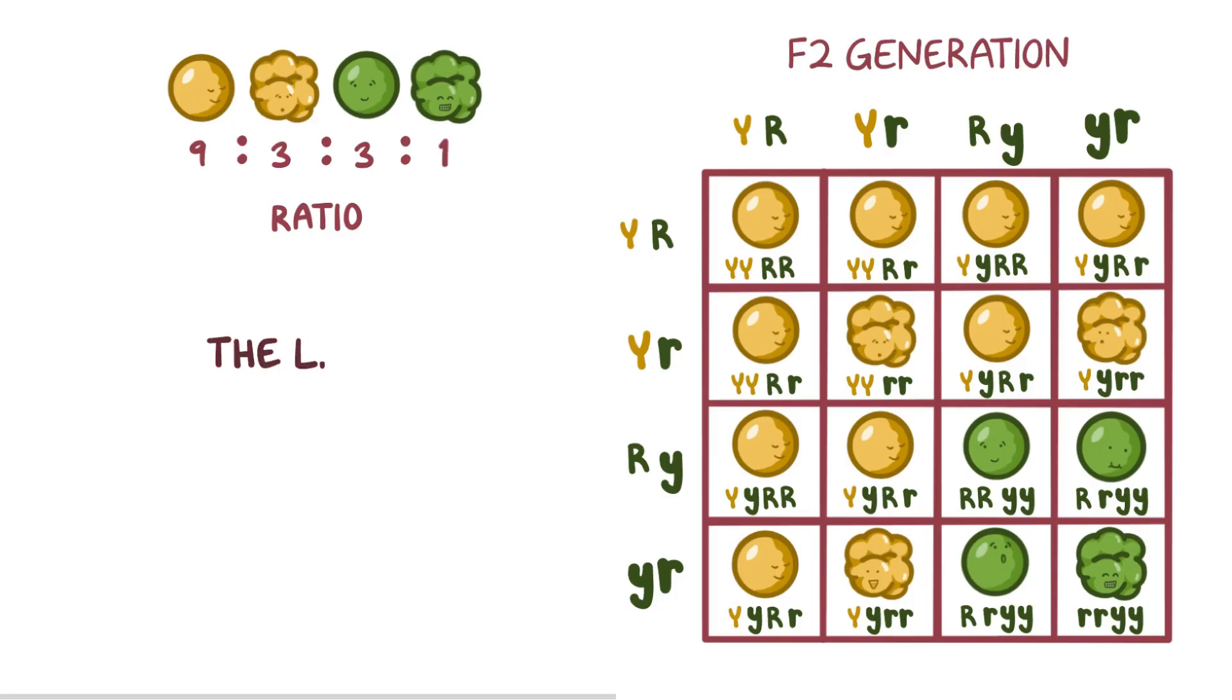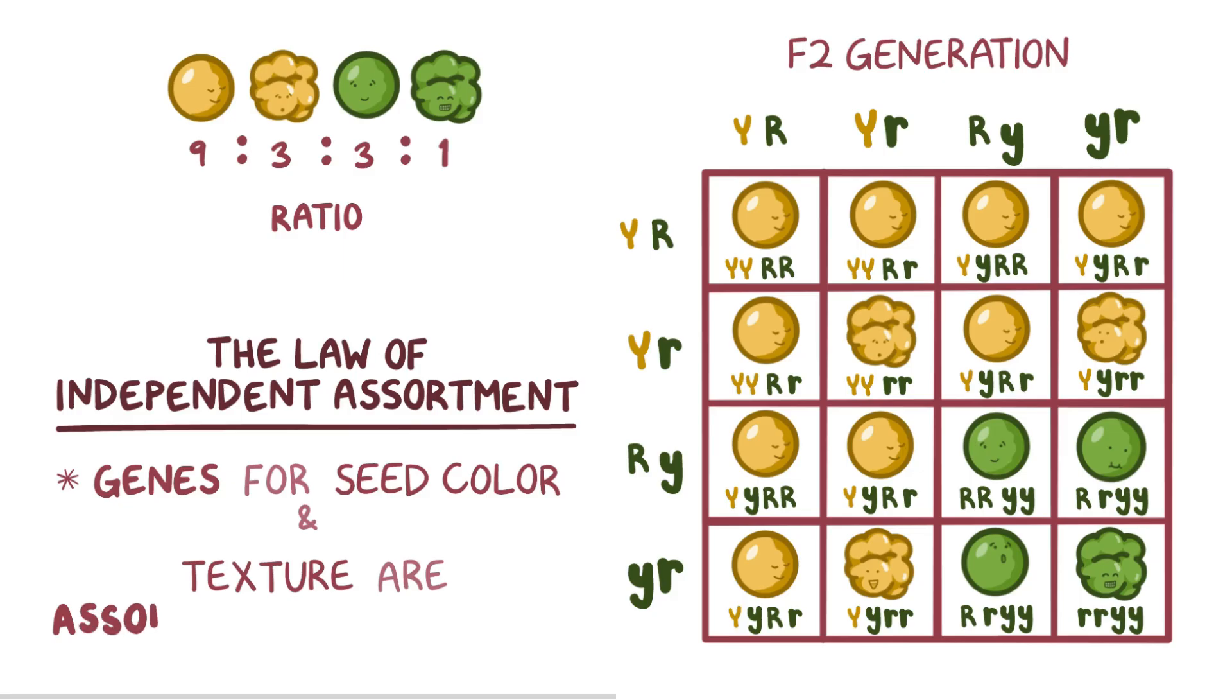And this helped establish the law of independent assortment, that the genes for seed color and seed texture were assorting independently of each other, and they weren't somehow influencing one another.